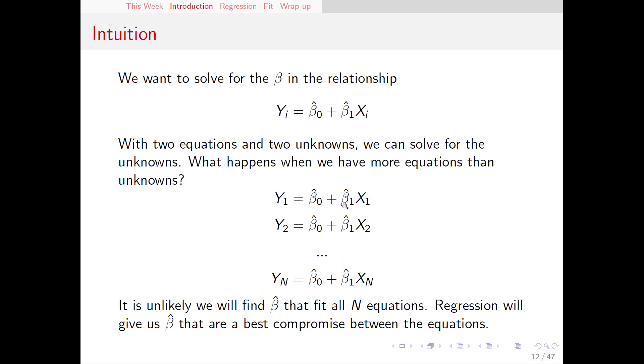y₁ equals β₀ hat plus β₁ hat x₁, y₂ equals β₀ hat plus β₁ hat x₂, and so on all the way out to yₙ and xₙ. The problem with this is that we have N equations and only two unknowns. Chances are we're not going to be able to actually find a β₀ hat and β₁ hat that actually make all N of these equations true. It's just not going to happen.